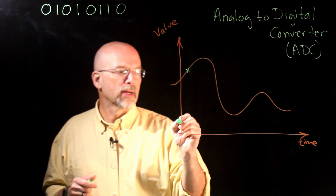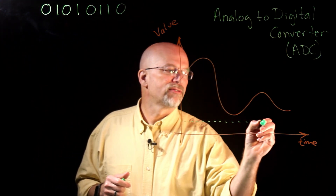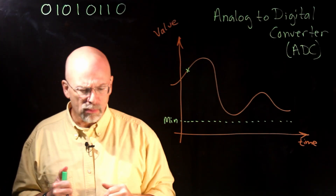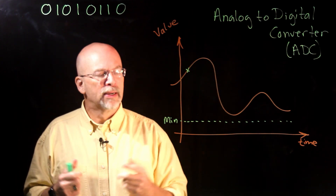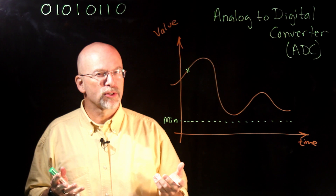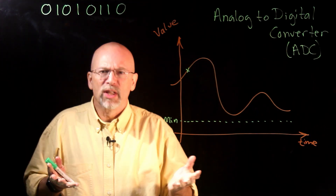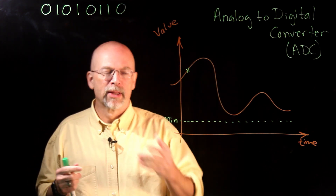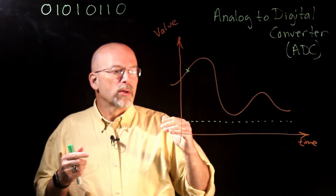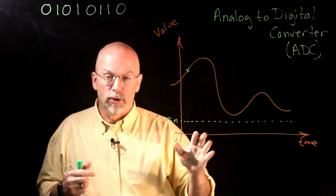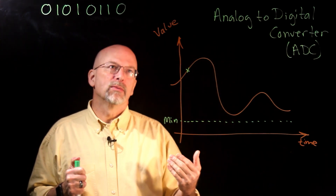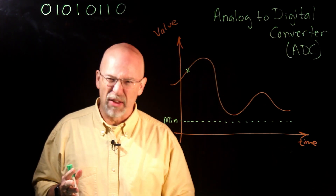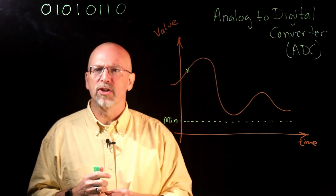One important thing is we have to define a minimum — we're not going to go any lower than that. Think about an oven with a digital display: I don't really care if the temperature is less than 200 degrees. You can't cook anything under 200 degrees; everything from 100 to 200 is pretty much just warm. So we don't need our analog to digital converter to go all the way to absolute zero, negative 273 degrees Celsius. For this oven application, 200 degrees is good enough.